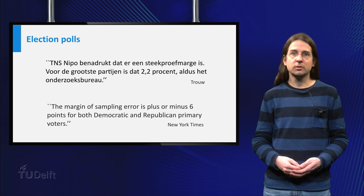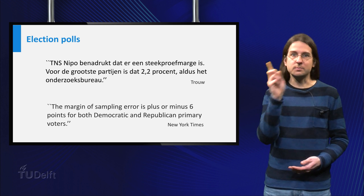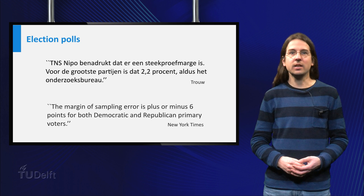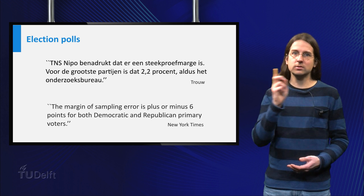Therefore the polling company can only give an estimate of the number of seats a party is going to get, and not the true value. The plus minus part is meant to give an idea of the size of the error. Basically they are saying, with high probability the number of seats this party would get will lie in the interval from 13 to 17.